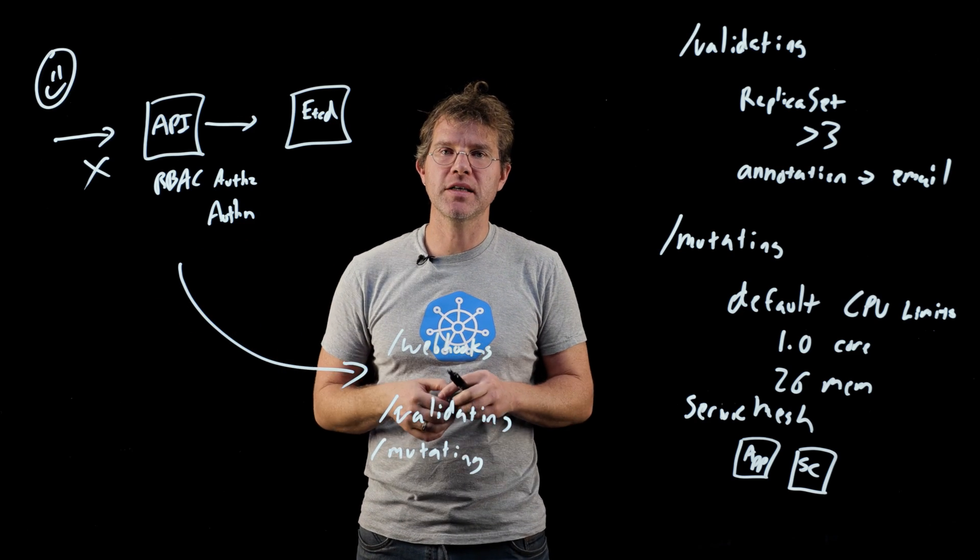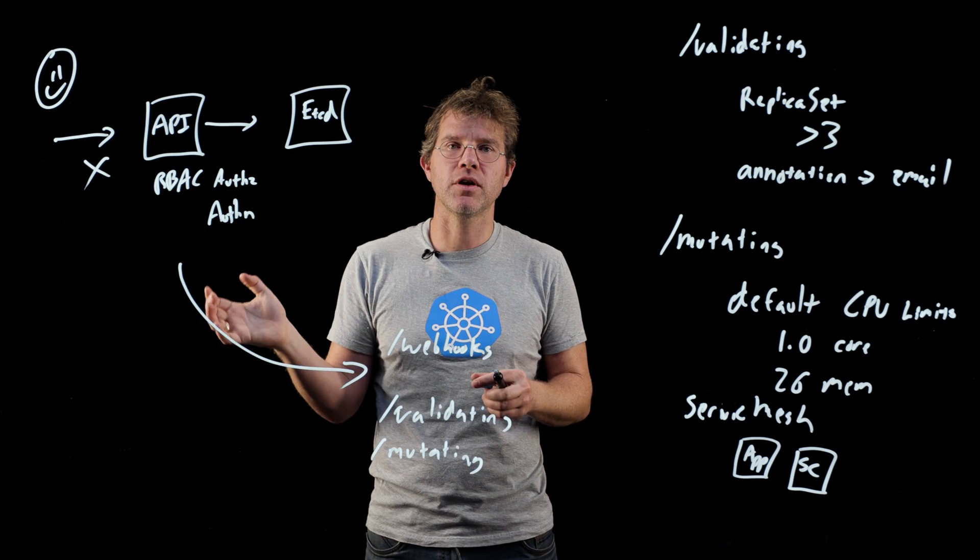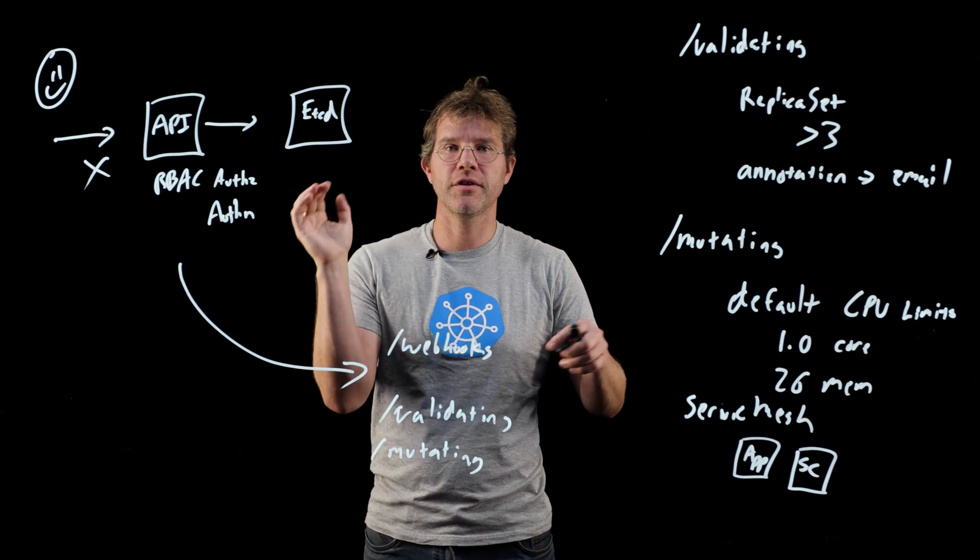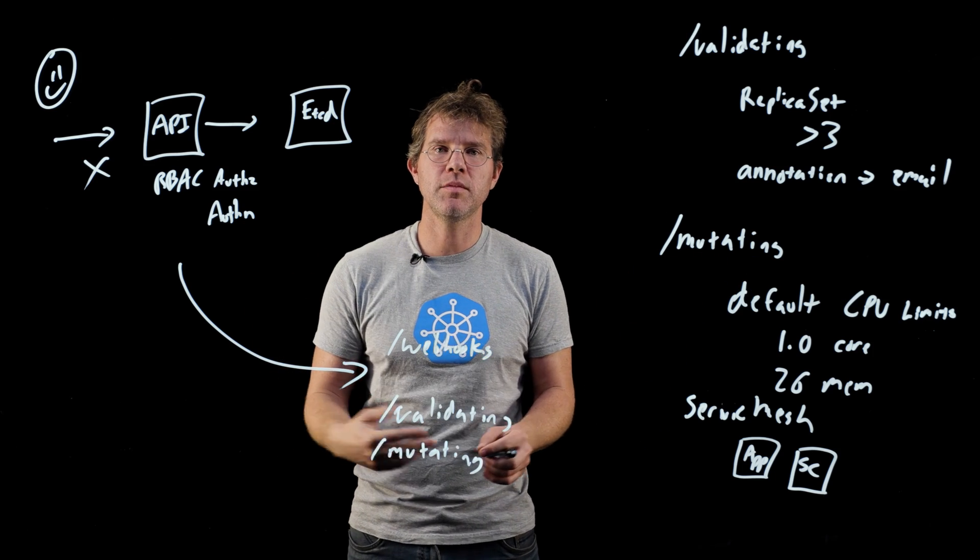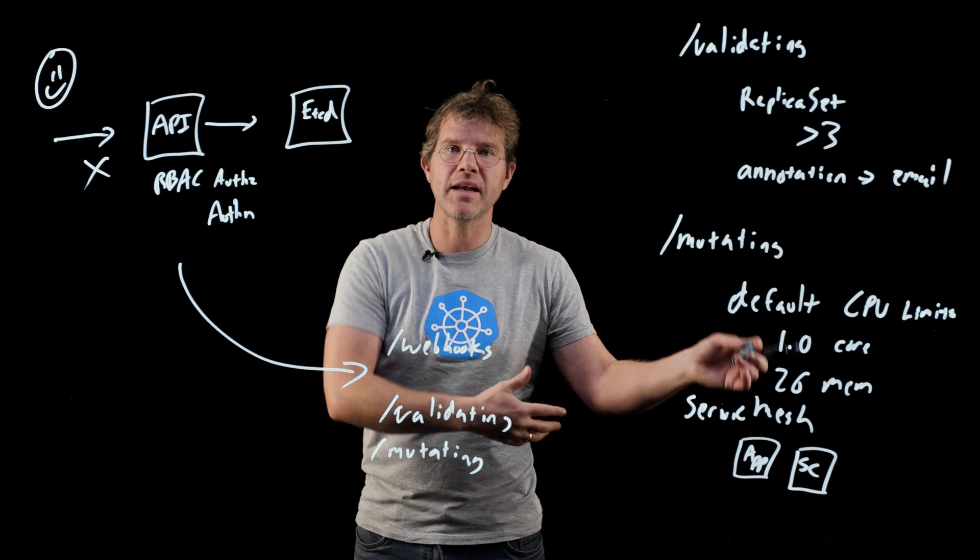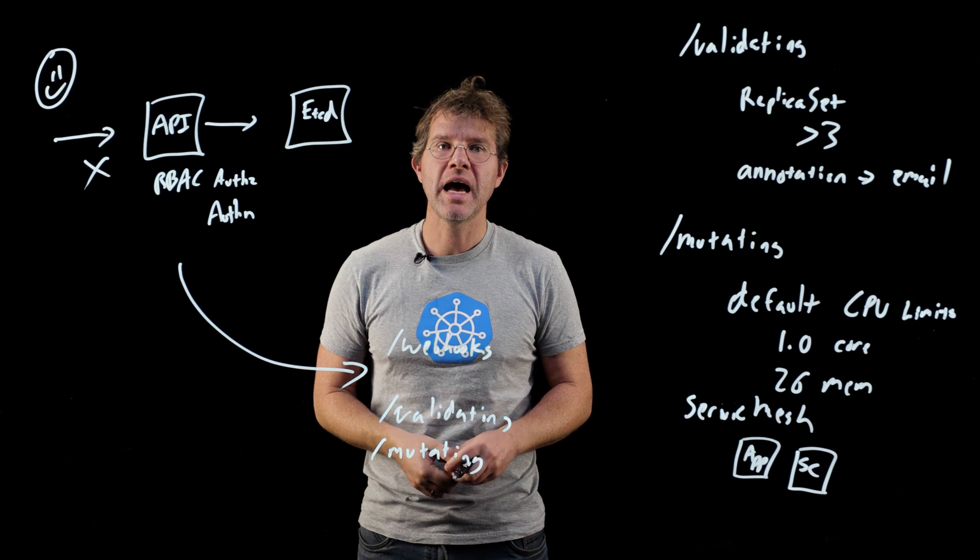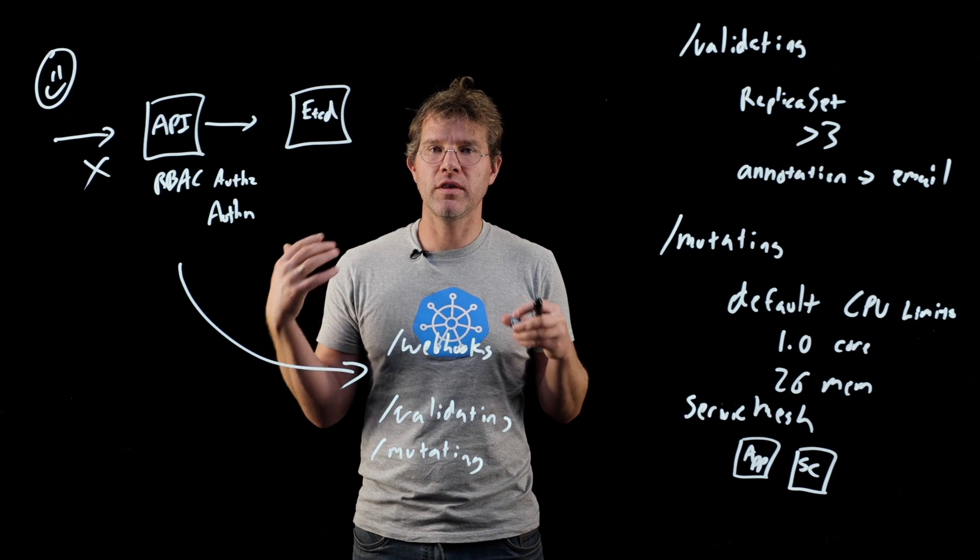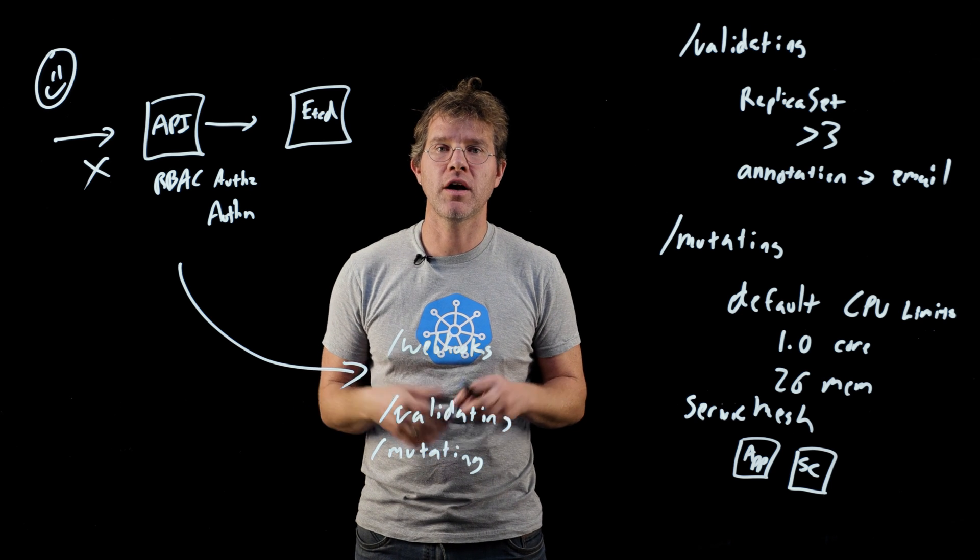I hope that gives you a perspective about how admission controllers integrate with the basic API flow in Kubernetes. The differences between a validating admission controller for things like policy and a mutating admission controller for defaulting or adding new sidecars to your applications. And I hope you see how they can empower you to do even more cool things with the containers that you deploy to Kubernetes on Azure or elsewhere.